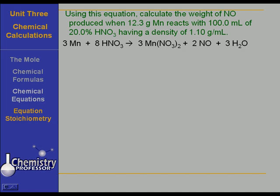Now try this one. Using this equation, let's calculate the weight of nitric oxide produced when 12.3 grams manganese reacts with 100 milliliters of 20% nitric acid having a density of 1.10 grams per ml. We're going to use the same procedure.